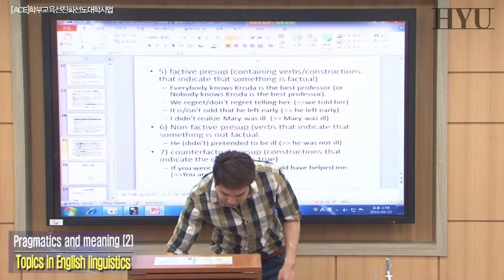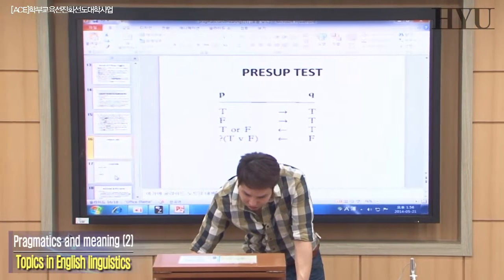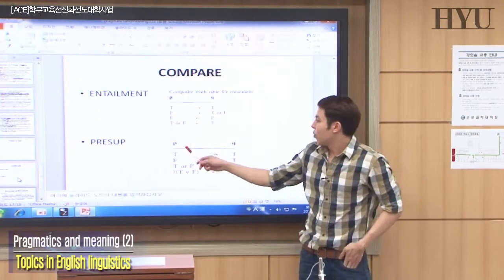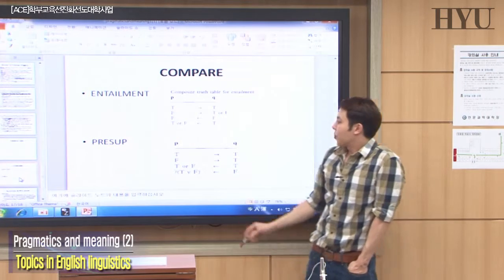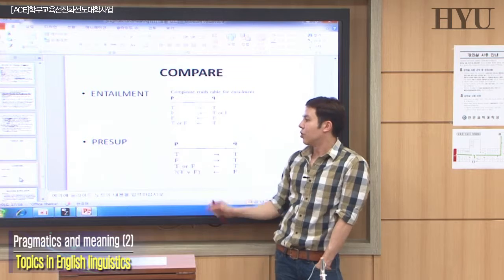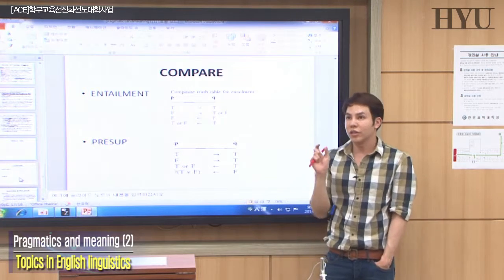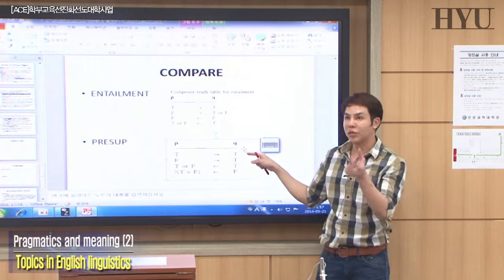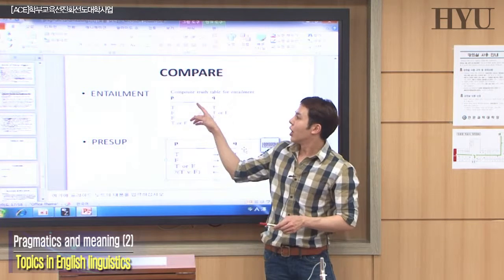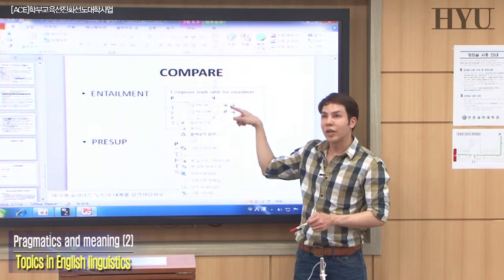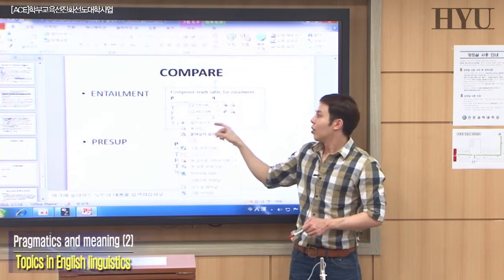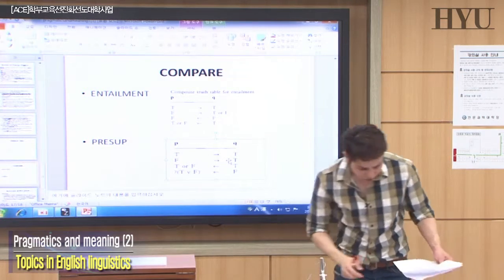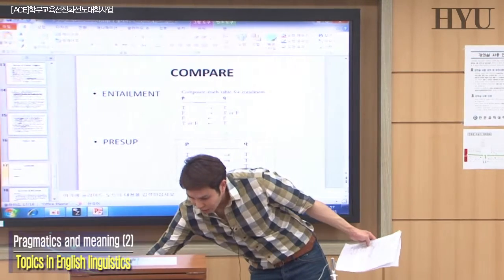In terms of the truth-conditional chart: for presupposition, whatever you do to the original clause, the presupposition remains the same — it still holds. But for entailment, the Q part may change when you perform an operation on the original statement. That's the second type of meaning, which we call presupposition.